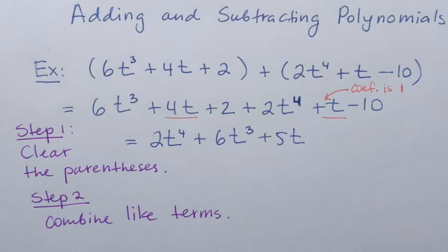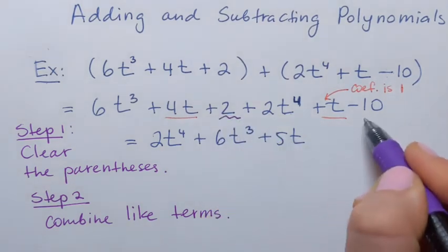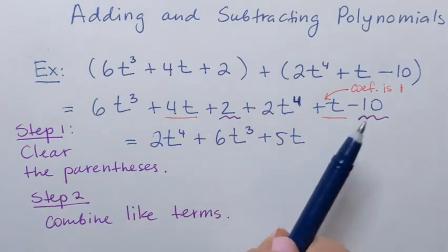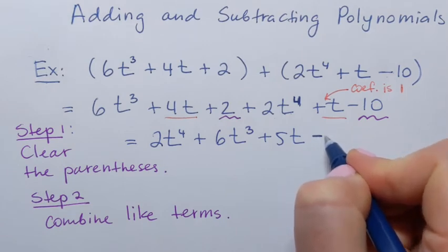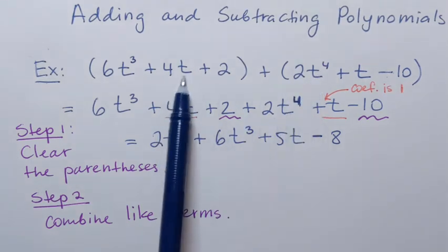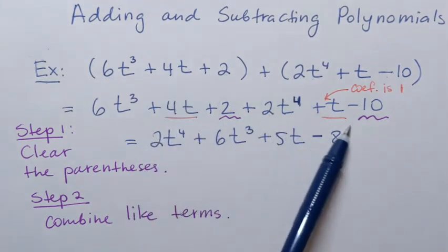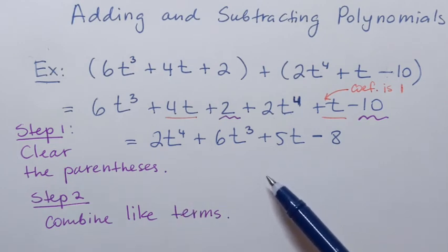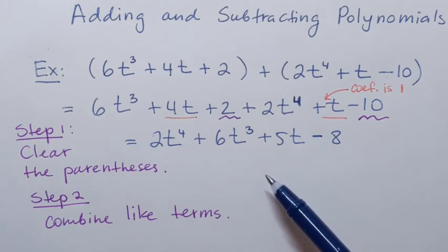And then I have just the numbers or constants left: 2 and then minus 10. I'll combine those as well — 2 minus 10 is negative 8, so minus 8. And that's going to be the answer. Once I add those two polynomials, I end up with another polynomial. Addition is pretty easy — there is nothing special here, we just need to carefully find and combine like terms.